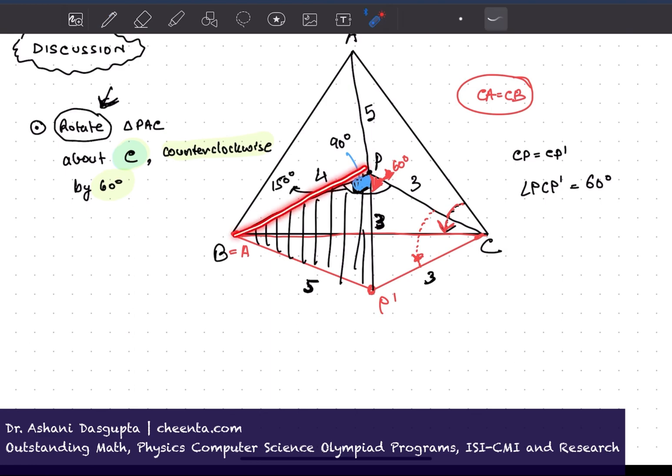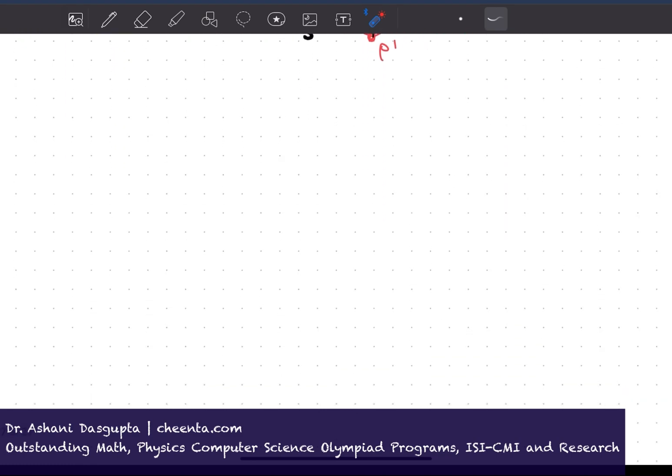Now, we have this triangle PBC, where PB is 4, PC is 3, and BC we want to find out. And this angle is 150 degrees. So let me draw it here. We have PC is 3, PB is 4, and this angle is 150 degrees. And we want to find out BC.